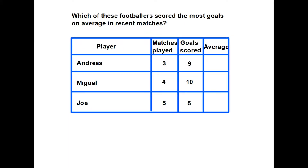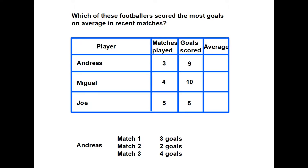Now let's look at another question, because it isn't always clear which numbers we're actually working with. This typical exam question asks: which of these footballers scored the most goals on average in recent matches? We have three players — Andreas, Miguel, and Joe. Looking at Andreas, we want to know his average goal score. We know he scored nine goals and played in three matches.